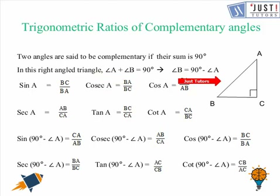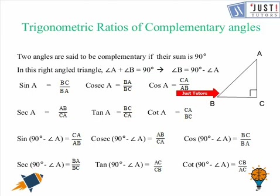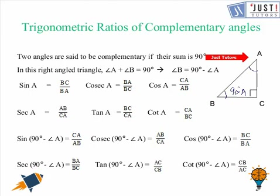So whenever during solving trigonometry questions we come across an angle which is 90 degrees minus A, it is nothing but the third angle of that right angle triangle. Now we know the three angles: 90 degrees, 90 degrees minus A, and angle A. We will find the ratios of all trigonometric functions with angle A and angle B respectively.